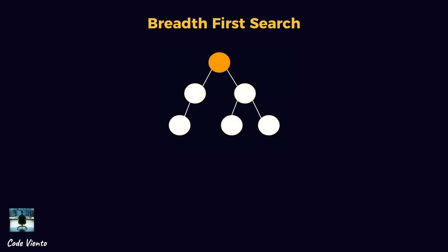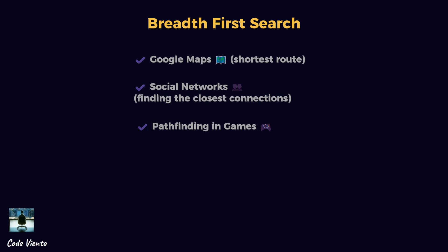Imagine a maze where you need to find the shortest way out. Breadth-first search explores all possible paths step by step, ensuring the first exit it finds is the shortest. Unlike depth-first search, which might take a deep but incorrect path first, breadth-first search guarantees the optimal solution in an unweighted graph. BFS is used on Google Maps to find the shortest route, in social networks for finding the closest connections, and for all path finding in games.